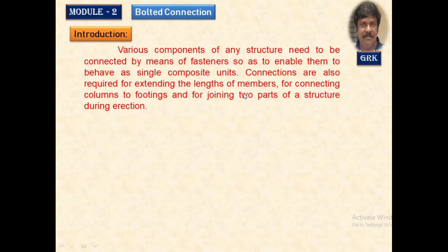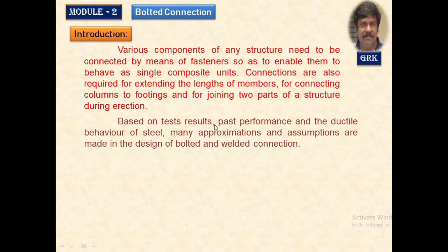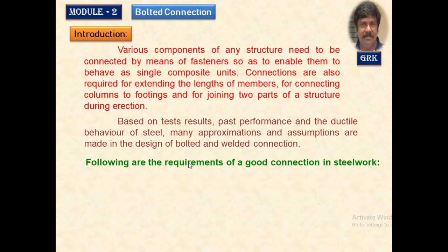Welcome to the section on Bolted Connection. In this chapter, let us study about the various fasteners that are used to connect components to make a single component unit or a structure. Connections will be made at different levels in a structure. Based on the experience, the ductile behavior of steel, the approximations and assumptions made in the code — all these points we are going to use to design a bolted connection.